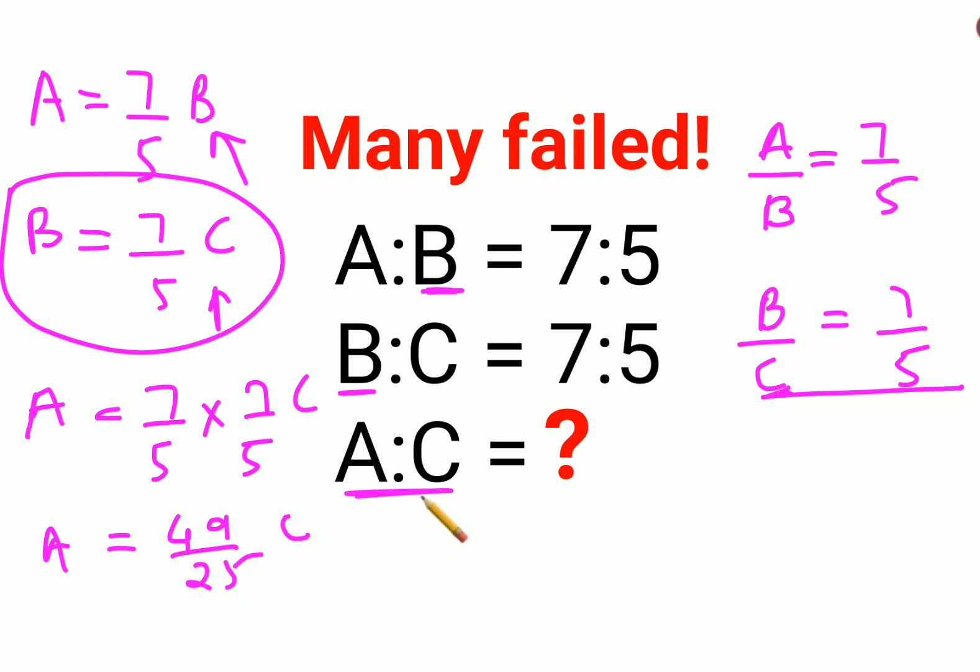Now we want A is to C. Basically you are dividing both sides by C or A is to C is nothing but A upon C which is 49 upon 25. So here the answer will be 49 is to 25.